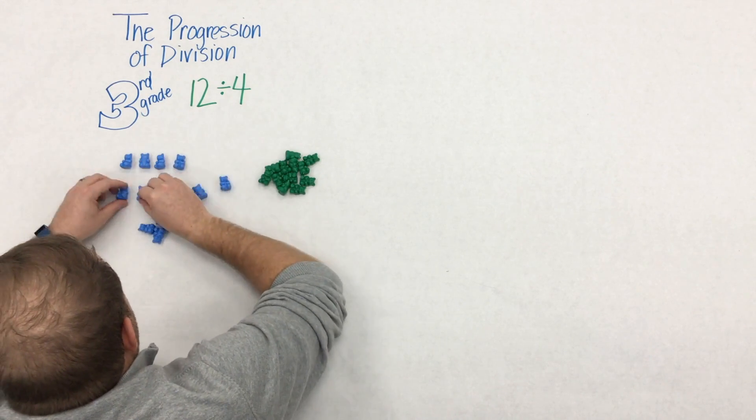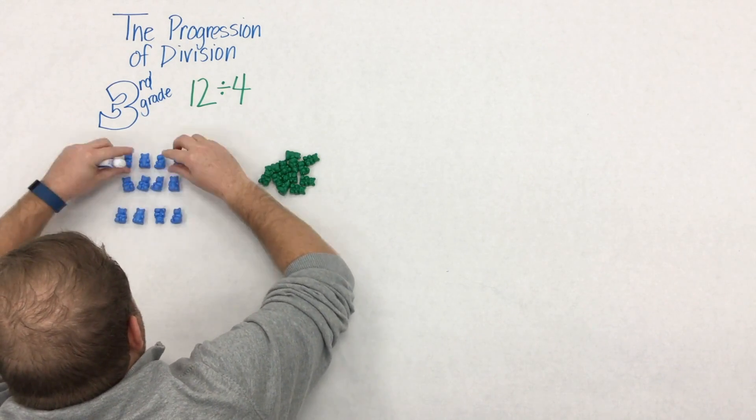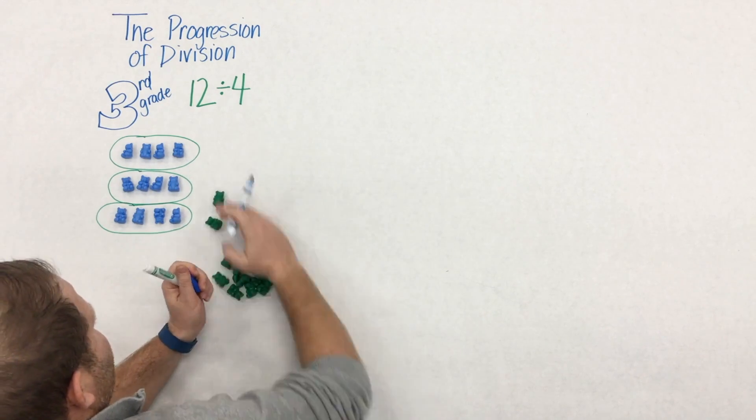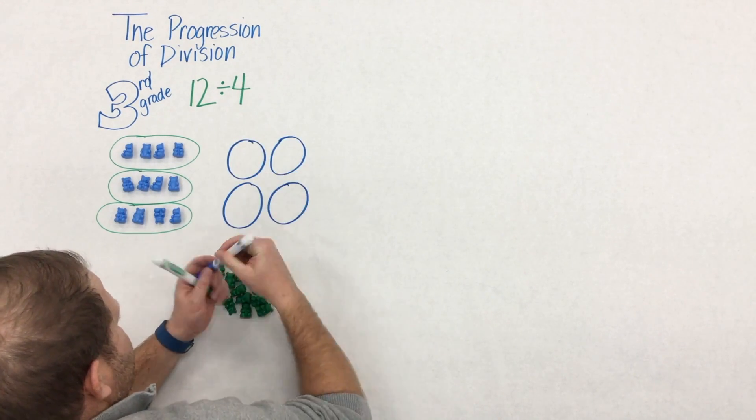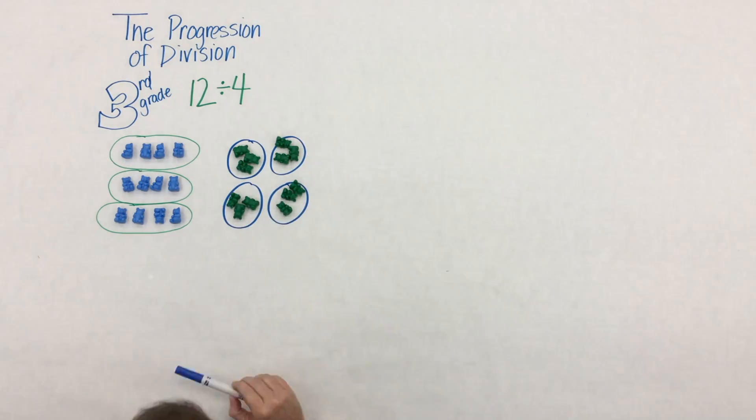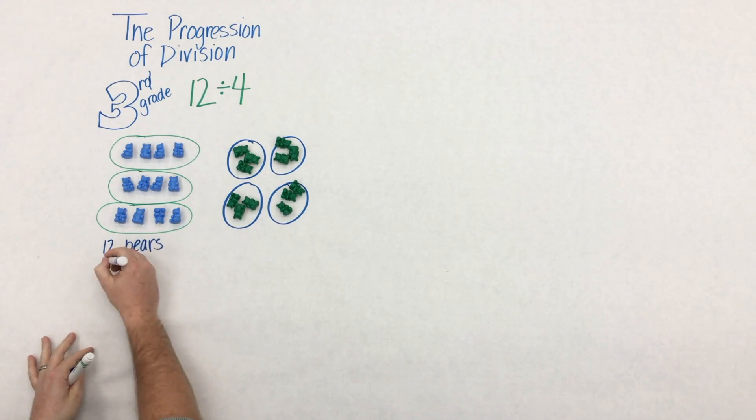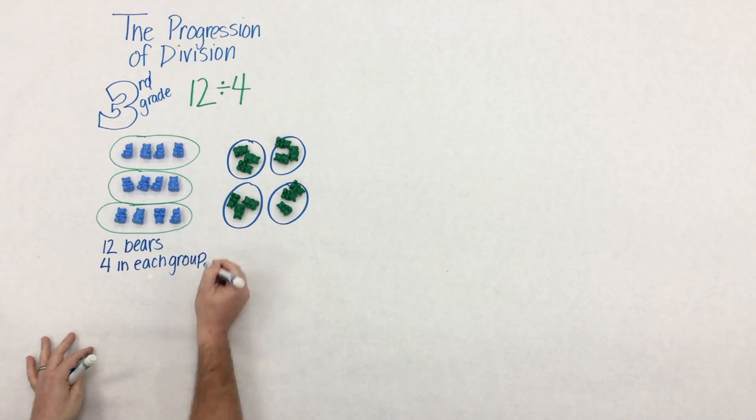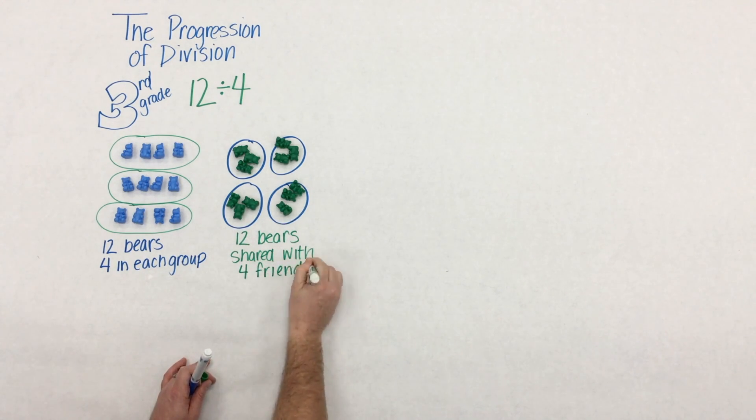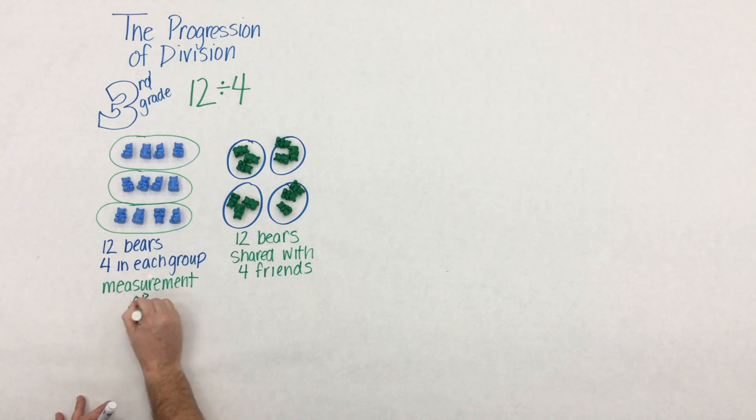So take this for example, 12 divided by 4. Well, we have two completely different models, and what this says is that the context, the story of the problem, plays a large part in developing students' conceptual understanding. In one we have 12 bears with four in each group, which gives us three groups, and 12 bears shared with four friends, which leaves us three with each group.